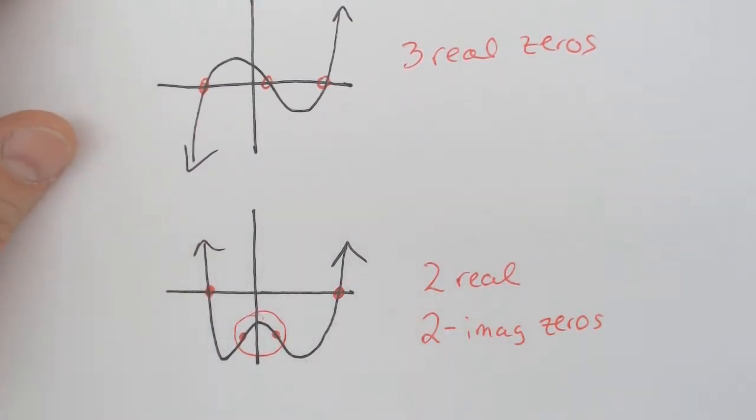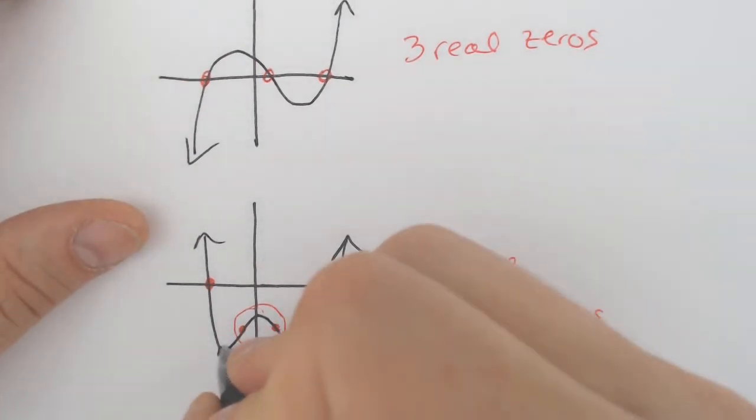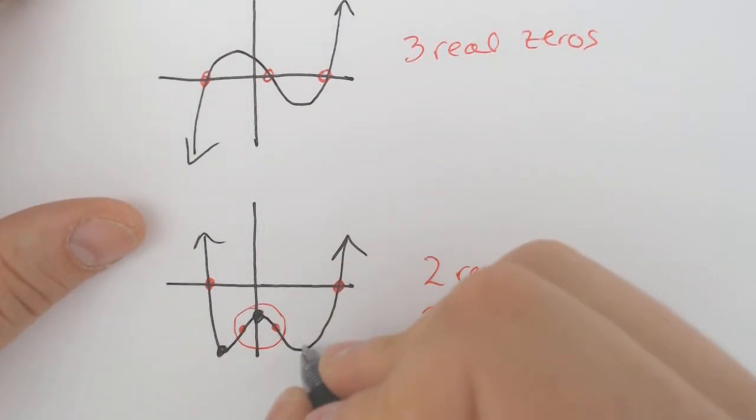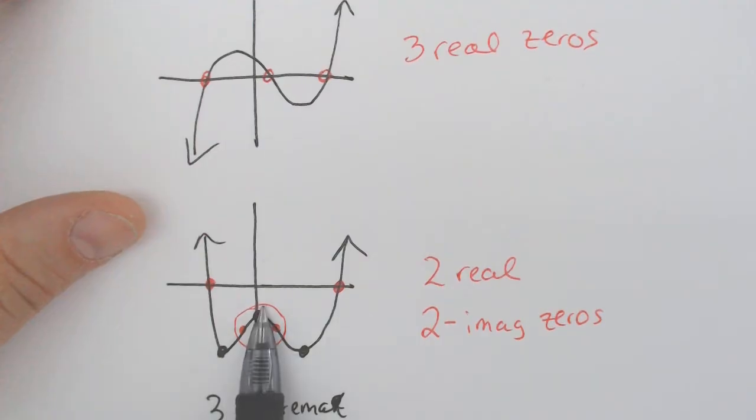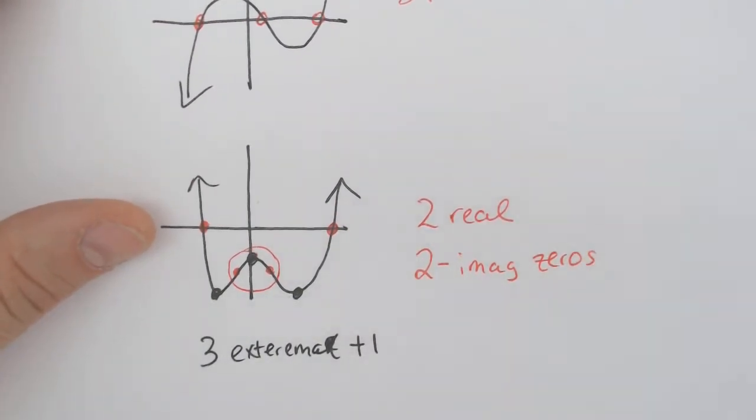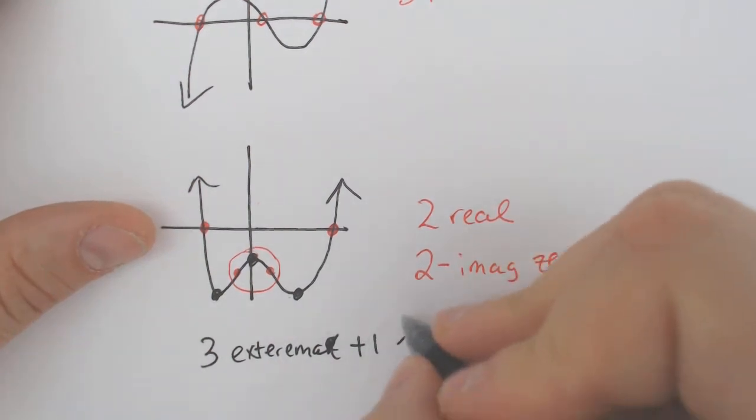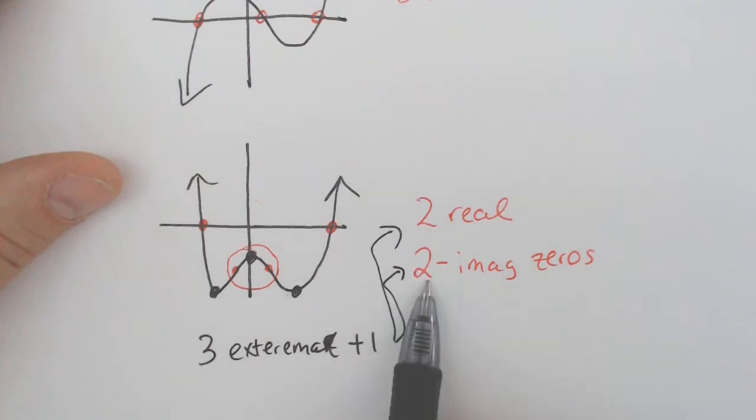Another way that is not a foolproof way but is very helpful in a lot of cases is you can count up the mins and the maxes, both. One, two, three. We have three extrema, so to speak, which is a combination of two mins and one max. And because we have three extrema, if you add one to that number every single time, that tells you the total as well, which should be two, four.